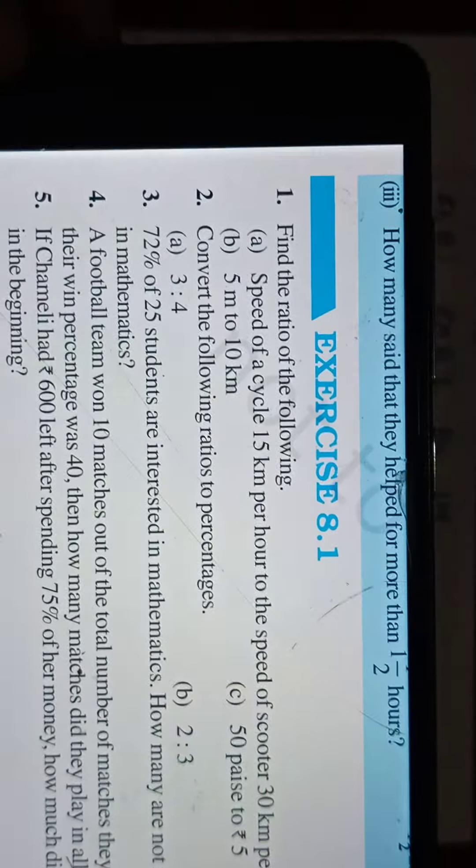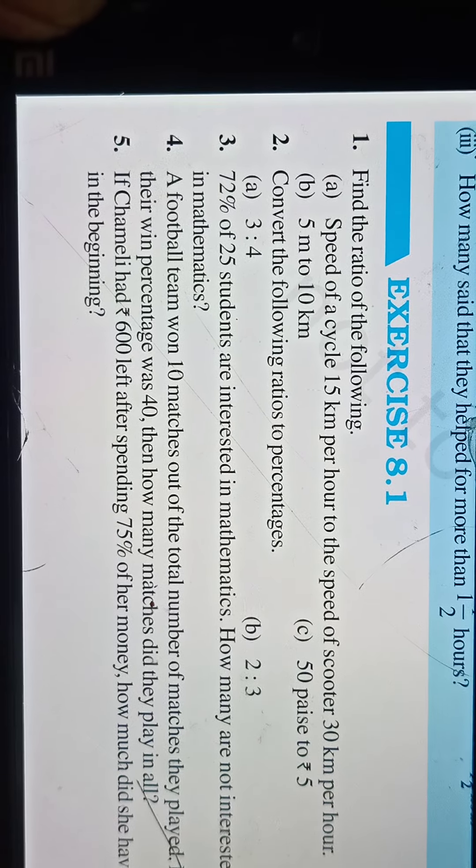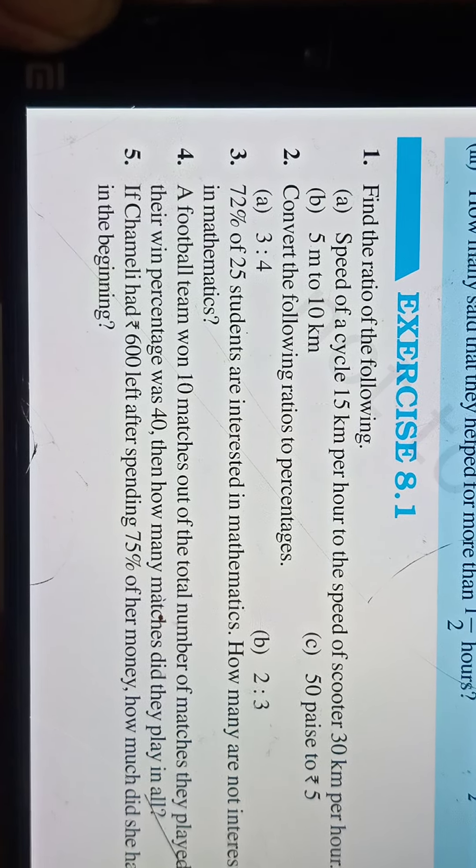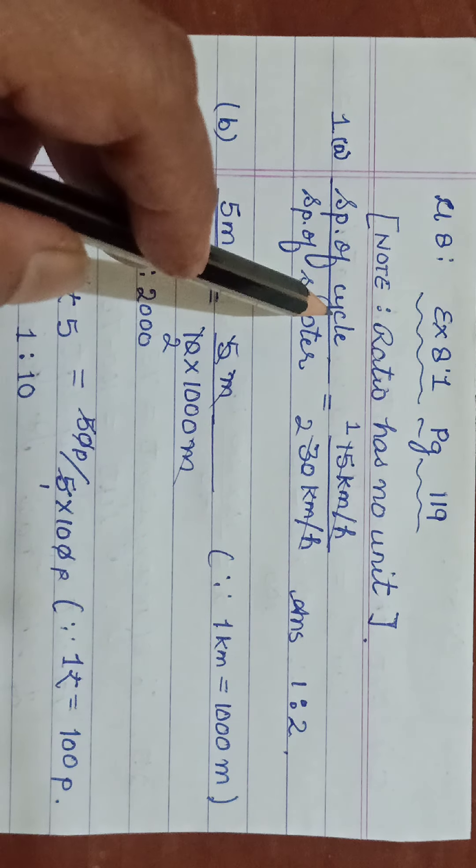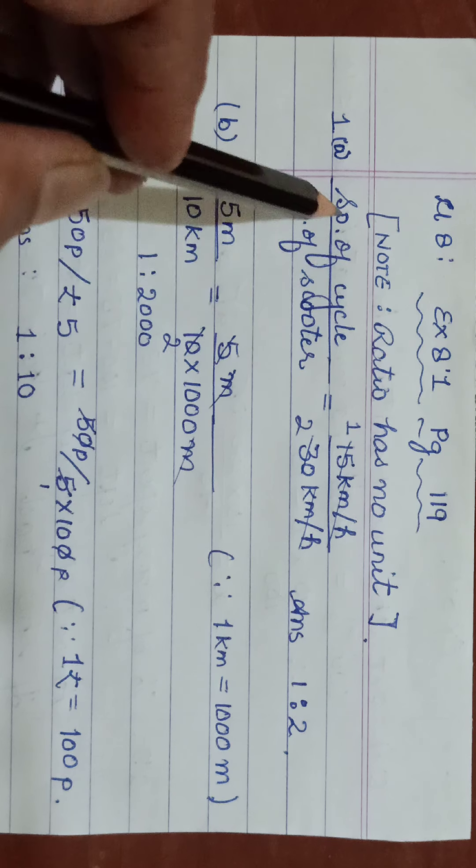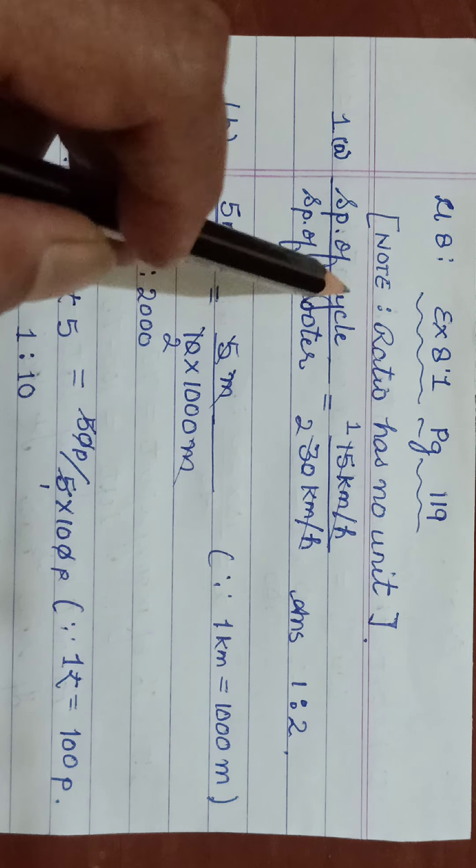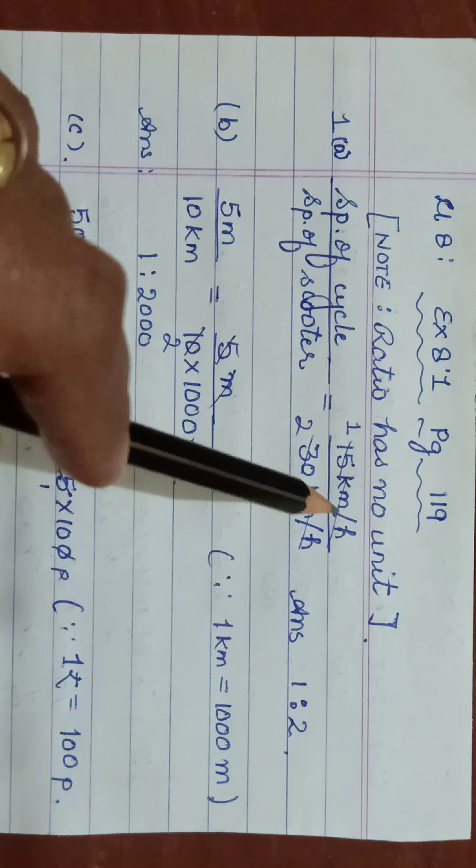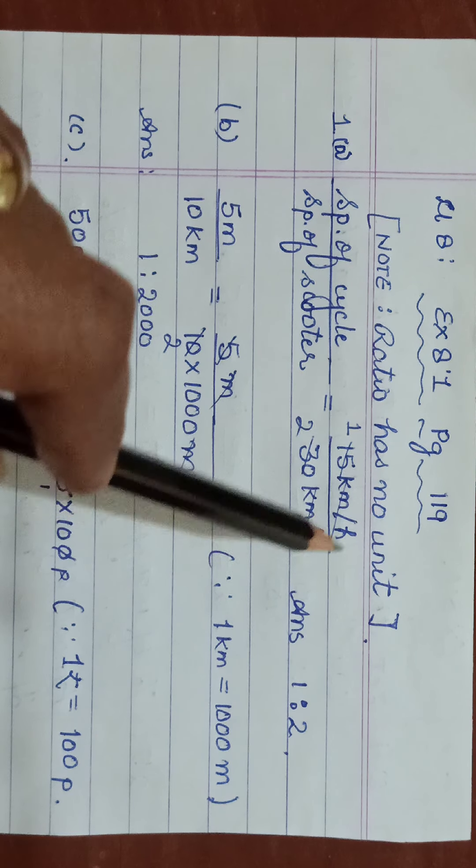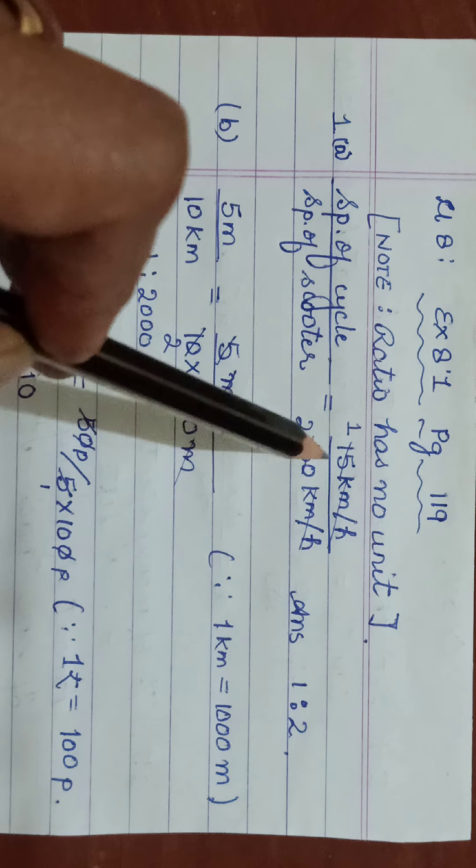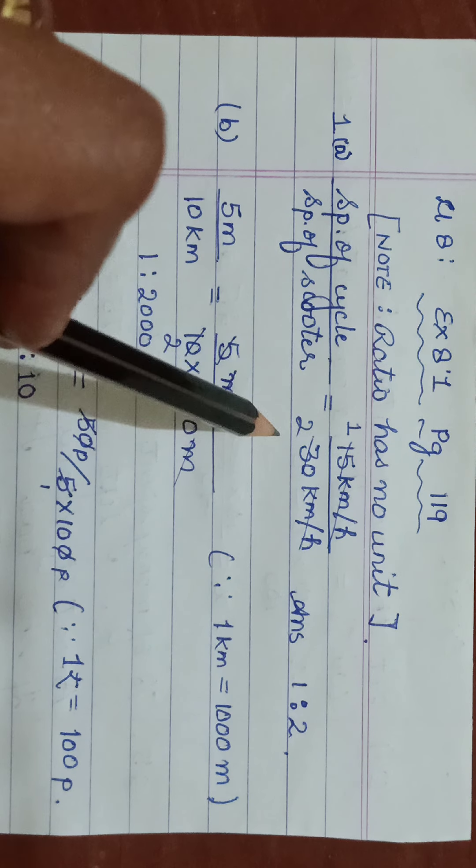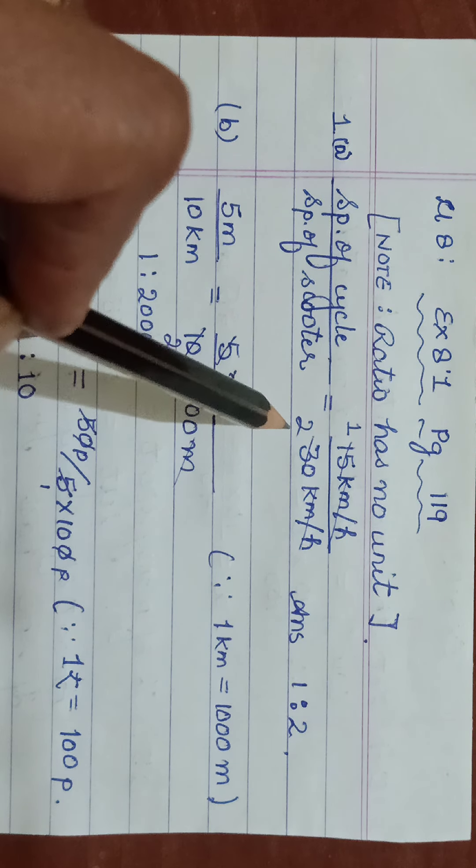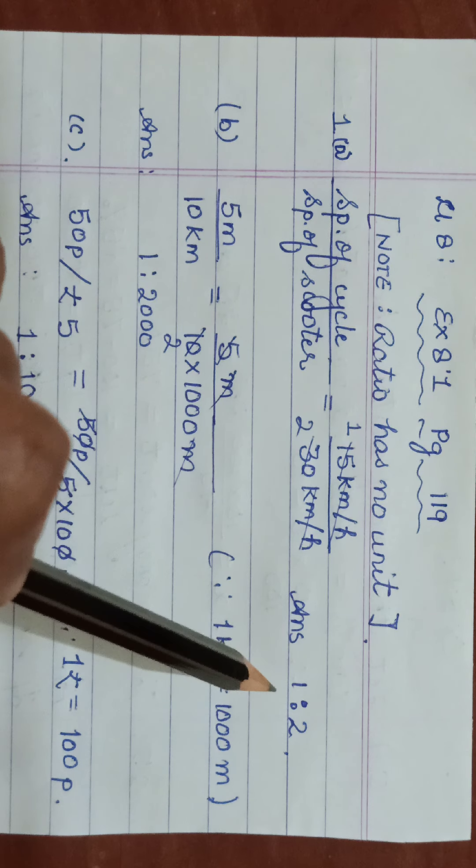The first question is find the ratio of the following. For part A, speed of cycle is given as 15 kilometers per hour and speed of scooter is 30 kilometers per hour. Finding the ratio means speed of the first quantity upon the other quantity. Speed of cycle upon speed of scooter: 15 kilometers per hour upon 30 kilometers per hour. Kilometers per hour same unit hai. The unit balances out. 15 divided by 30, ratio has to be in the simplest form. We will cancel out whatever we can. 15 into 2 is 30 straight away. So the ratio will be 1 is to 2.